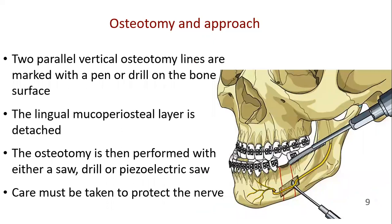This can be facilitated by the use of a piezoelectric cutting device. After the inferior alveolar nerve is identified and mobilized, two parallel vertical osteotomy lines are marked with a pen or a drill on the bone surface. The lingual muco-periosteal layer is detached from the bone with a periosteal elevator. The osteotomy is then performed with either a saw, drill, or piezoelectric saw. While performing osteotomies, care must be taken to protect the nerve.